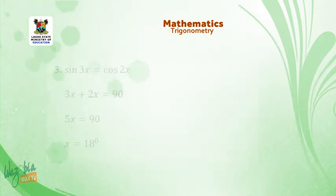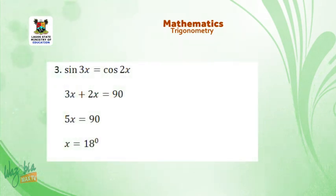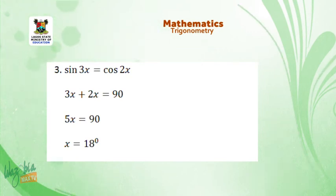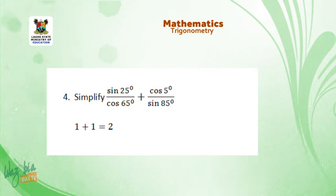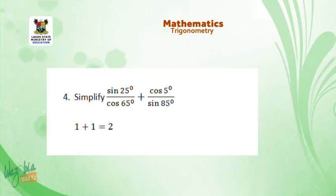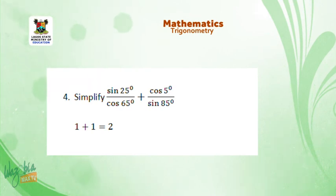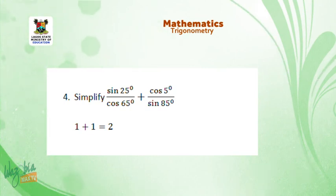Similarly, for sin 3x = cos 2x, add 3x and 2x to get 5x = 90, so x = 18 degrees. This can also be applied to simplify sin 25°/cos 65° + cos 5°/sin 85° without a calculator. Check whether numerator and denominator are equal: sin 25° = cos 65° since 25 + 65 = 90; likewise cos 5° = sin 85° since 5 + 85 = 90. Each fraction equals 1, so the result is 1 + 1 = 2.